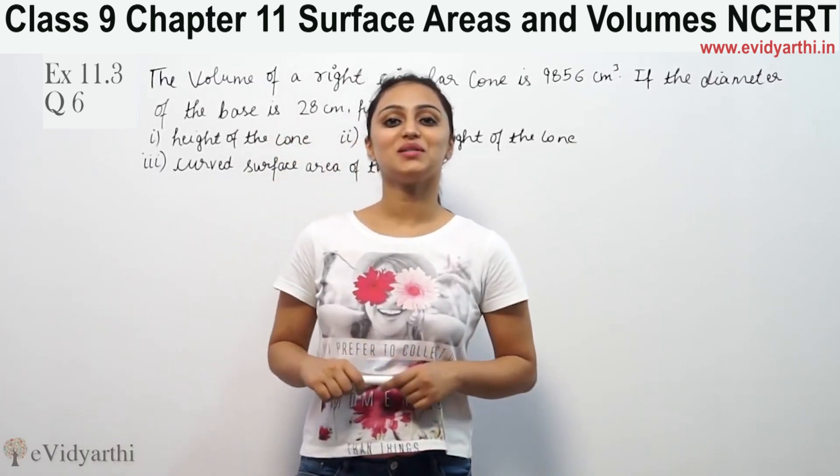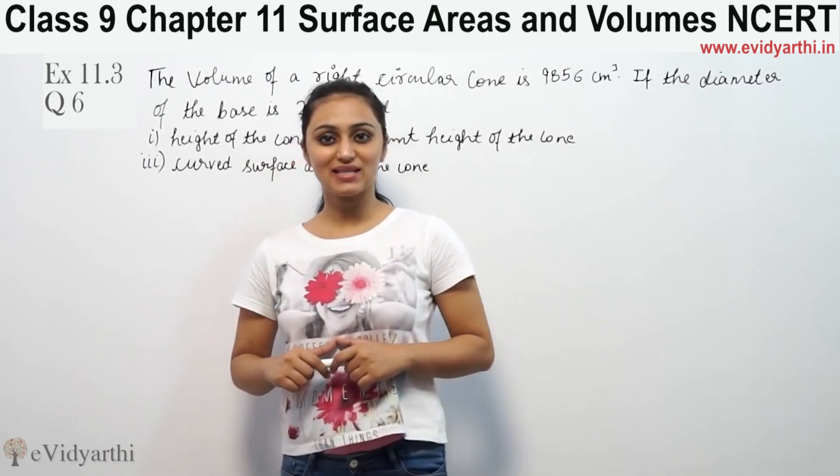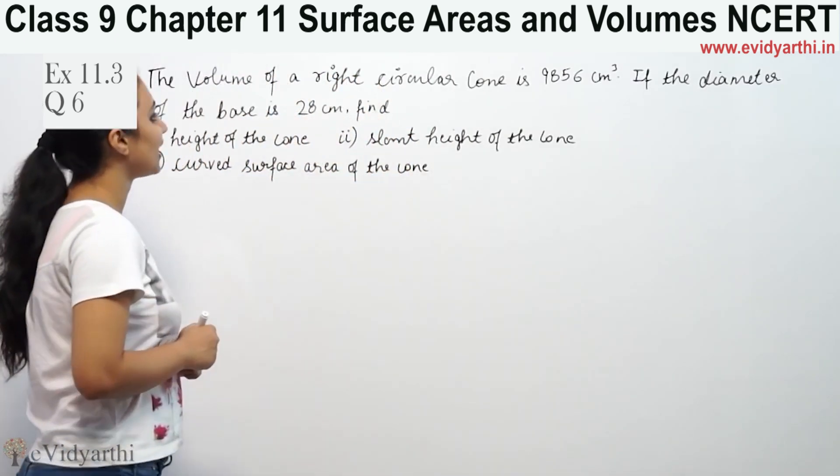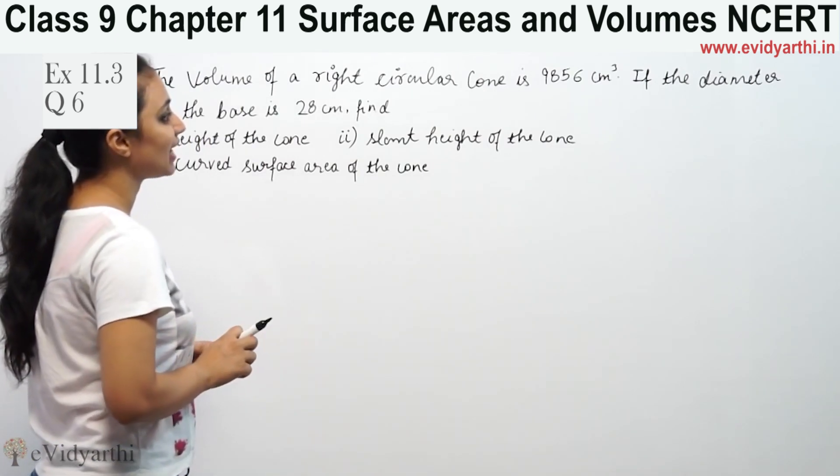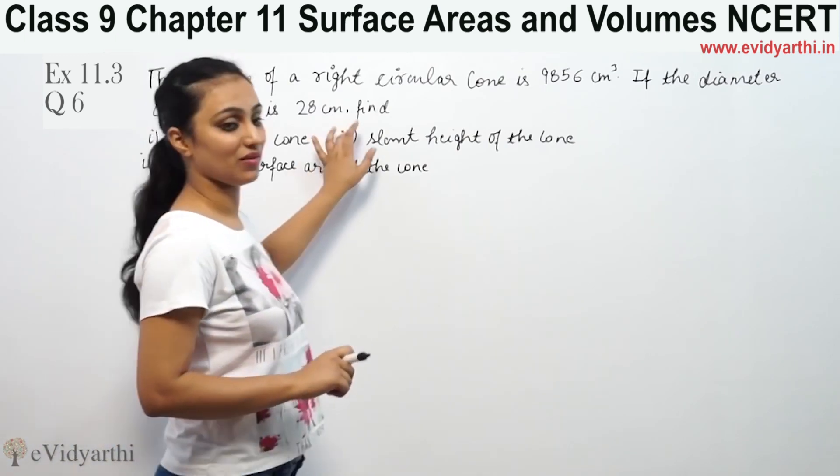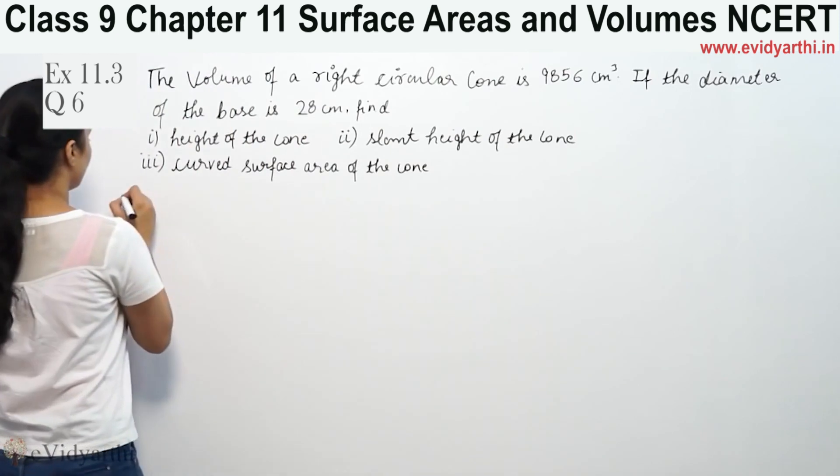Hey, what's up? This is Khushku with another question on surface areas and volumes. This is question 6 from exercise 13.7, page 233 from NCERT. The volume of the right circular cone is 9856 cm³. Volume and diameter of base are given. We have to find the height of the cone. First part.